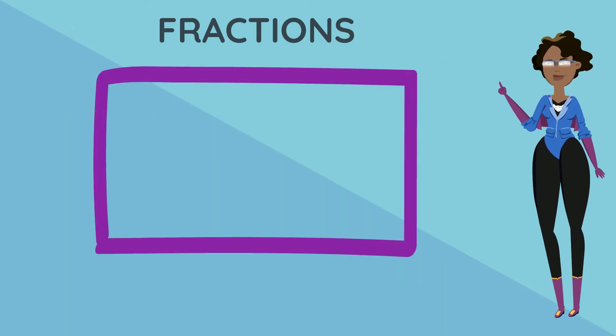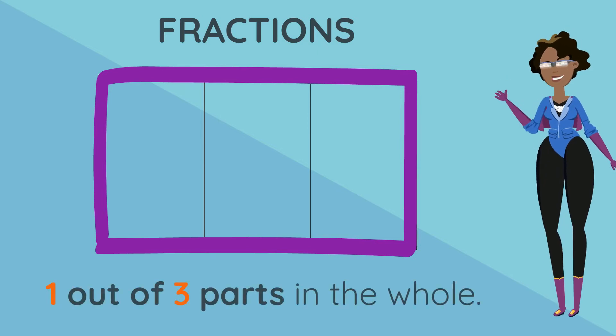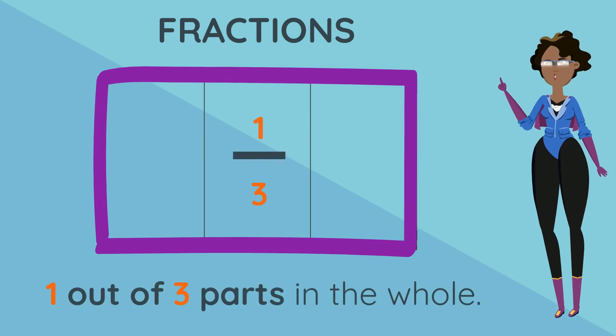The rectangle shown is the whole, which has been divided into three equal parts. Therefore, each of these equal parts is called a fraction of the whole rectangle. Each of these parts represents one out of the three parts of the whole, or one third.